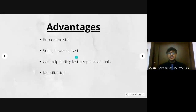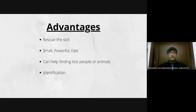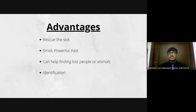The advantages of biochips are very clear. They can be used to rescue the sick through early detection systems. They are very small in size, powerful and faster than regular medical equipment. They can be used in finding lost people or animals, and can be used as an identification method. Also, biochips perform thousands of biological reactions in a few seconds, which can take traditional labs days, giving live reports on the patient's condition and helping doctors save lives.